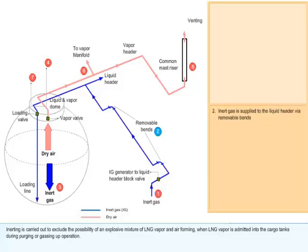Inert gas is supplied to the liquid header via removable bends. Inert gas reaches the cargo tank via the tank loading line.